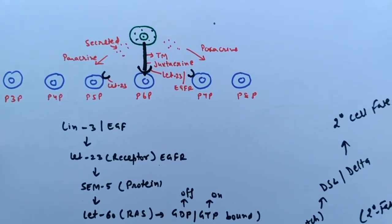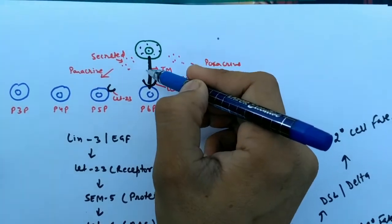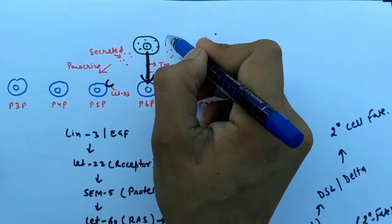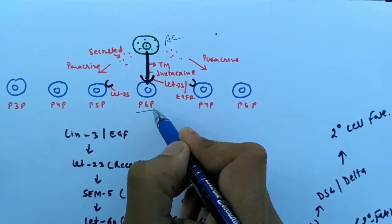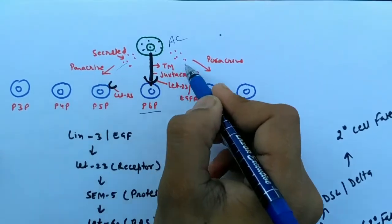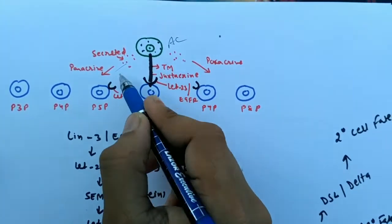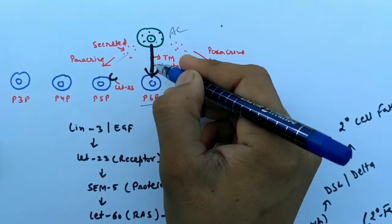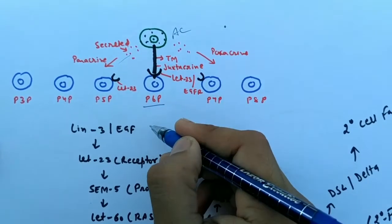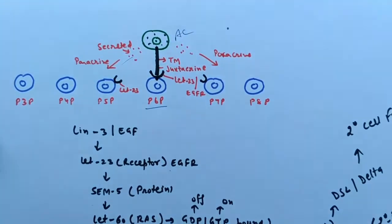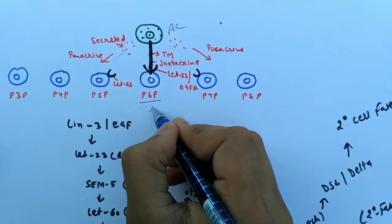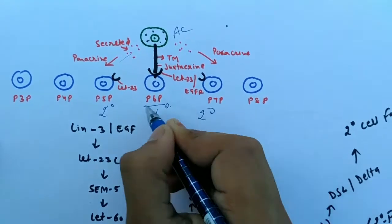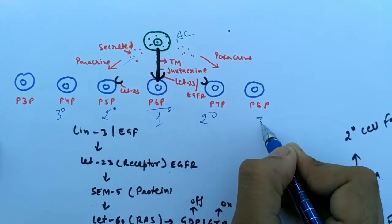This is the molecular mechanism showing vulva formation. Here is the juxtacrine signaling directly sent by the anchor cell to P6P. This is the lateral or paracrine signaling. The chemical is also transmitted to neighbor cells. Here is the transmembrane receptor that directly sends this signal. The directly receiving signal cells have the primary fate, and these are the secondary fate, and these are the tertiary fate determining cells.